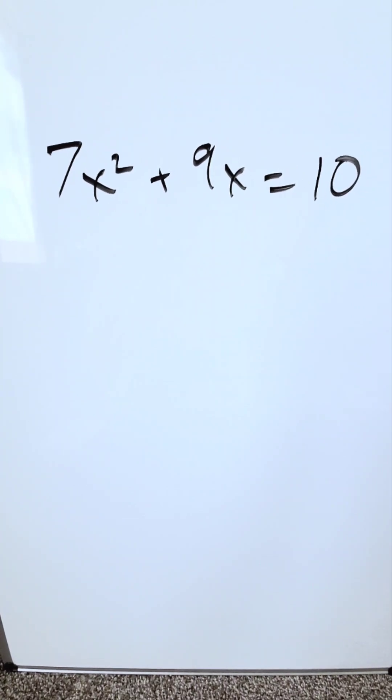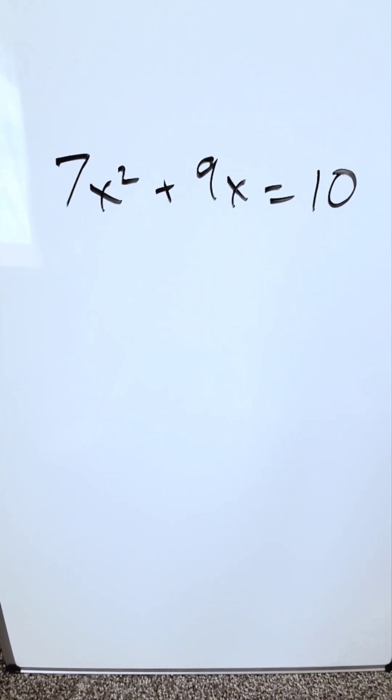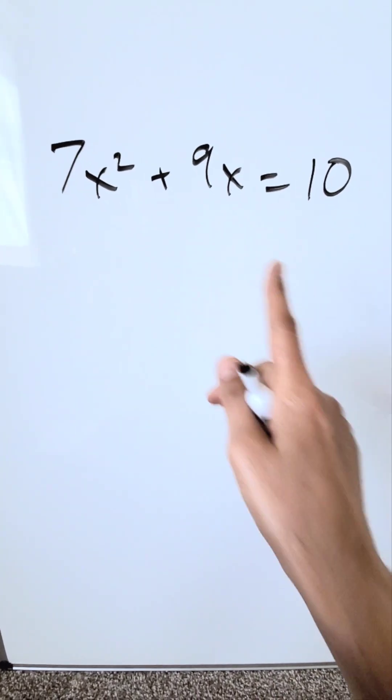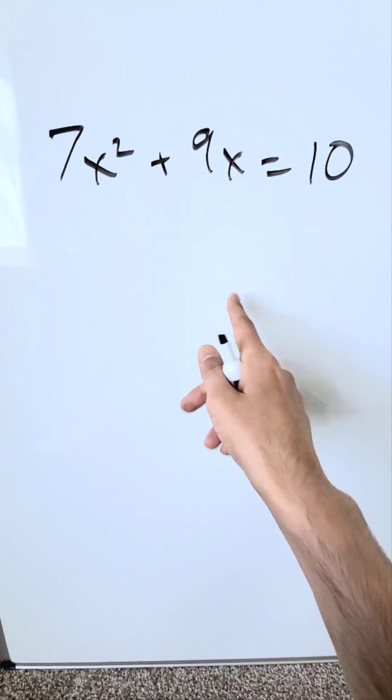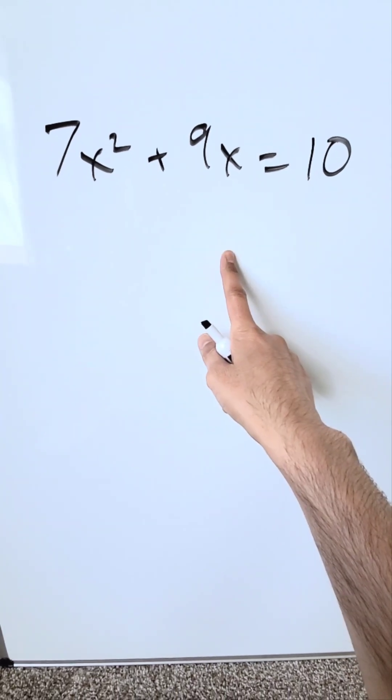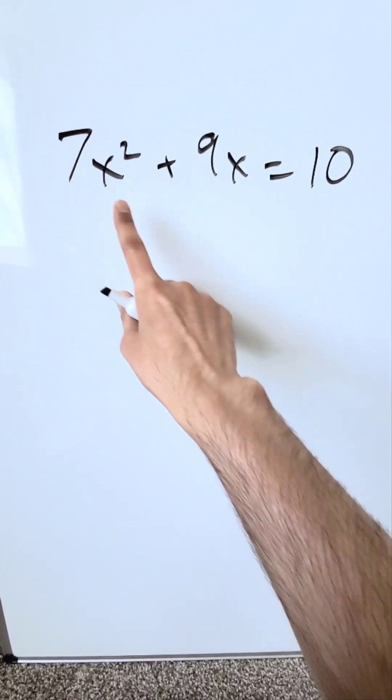Let's look over here at this quadratic equation and I'll show you how you should not proceed. This way I'm showing you first is incorrect, and I'll show you the correct way.